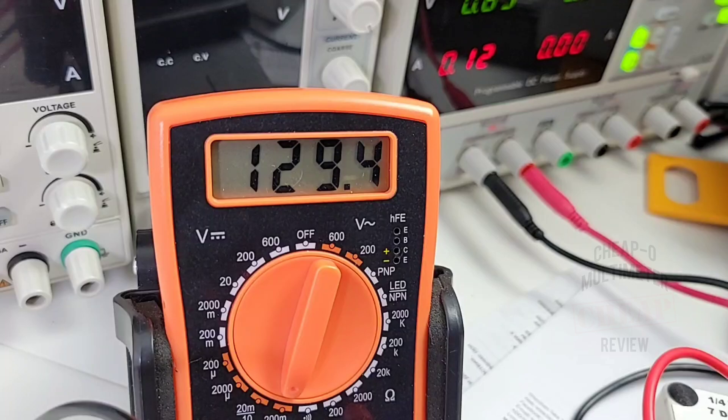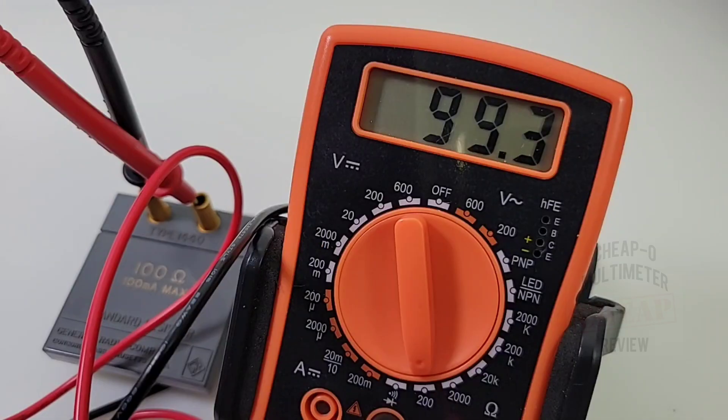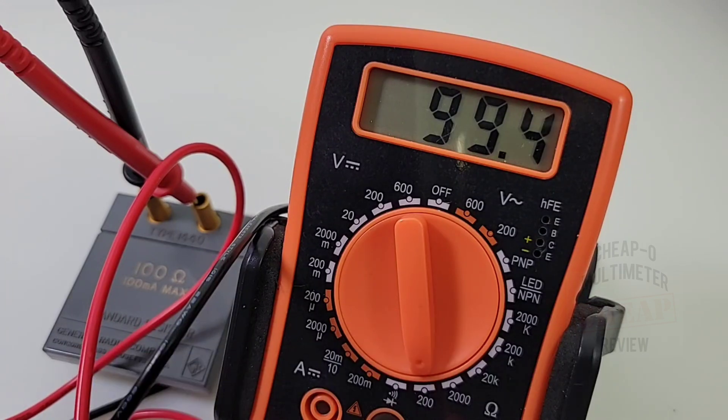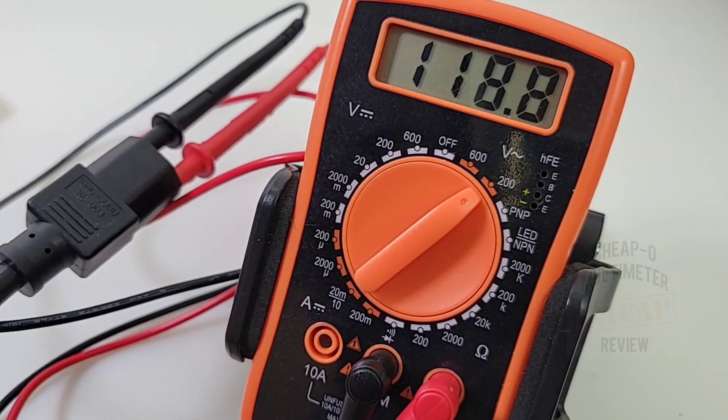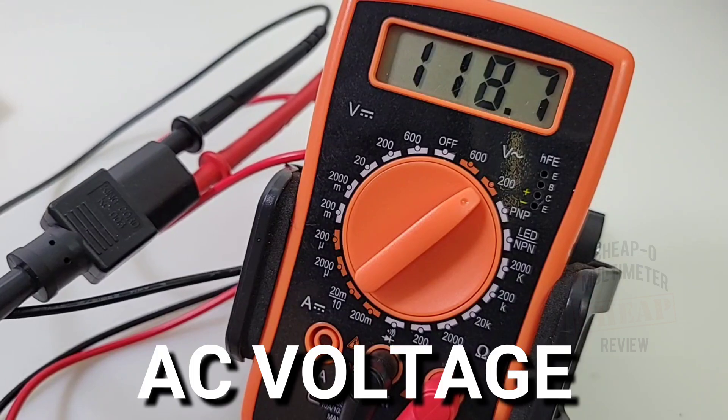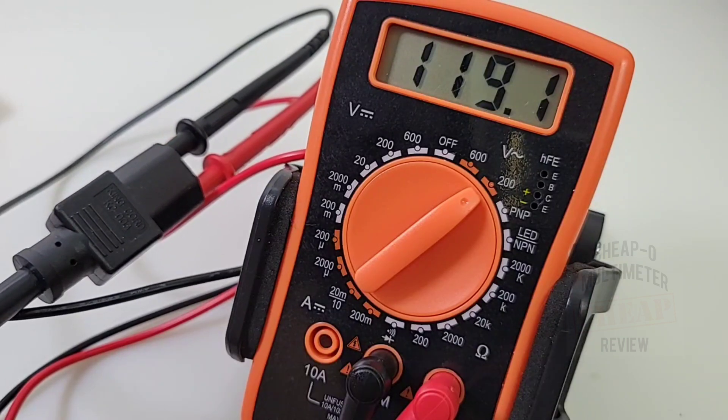In terms of resistance accuracy, we're out about seven counts, six counts, but hey, in spec and not too shabby for a cheapo. Now of course this is not a true RMS multimeter, but still, here we are in AC mode, coming up at about 119 volts, give or take. Looking good.